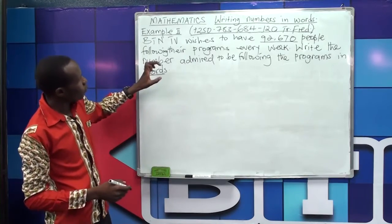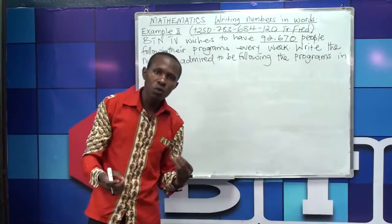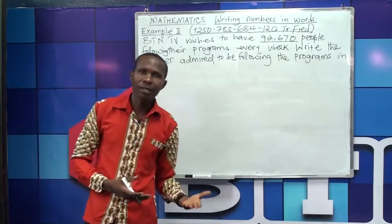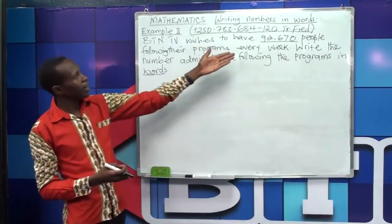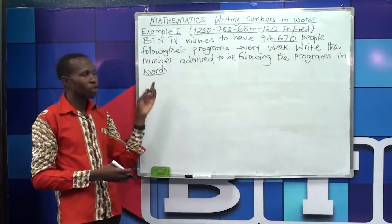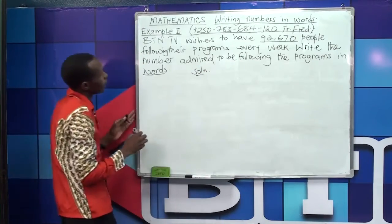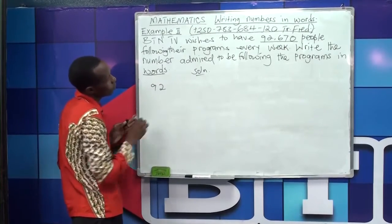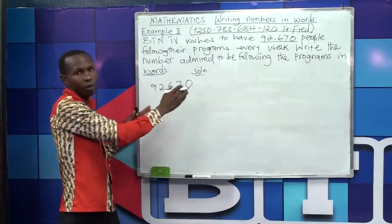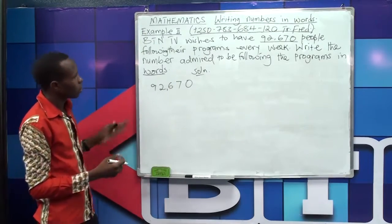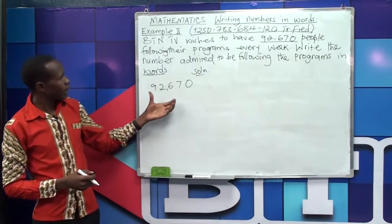We know the number of people they admire, and we know what they want — write the number of people admiring in words. If we have already identified the number of people, we just come and write it in words. I identify the number of people admired as 92,670. I put a comma, counting three digits from the ones side: one, two, three — comma after three digits. Then I draw my table just like in Example 1.